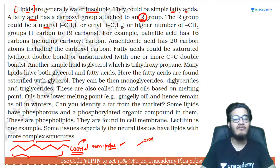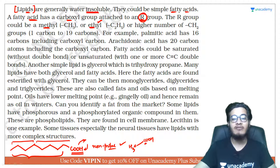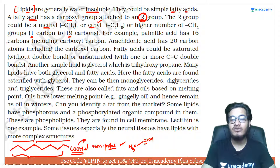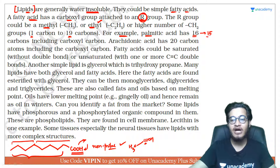If R group is 1 carbon (methyl, CH₃) और एक carbon COOH का, तो total fatty acid 2 carbon का बनता है। R group में 1 से 19 carbons हो सकते हैं, accordingly 2 carbon से 20 carbon तक के fatty acids देखने को मिलते हैं। उदाहरण: palmitic acid में total 16 carbons होते हैं — 15 carbon की hydrocarbon chain और 1 carbon COOH का।